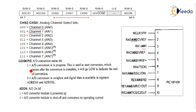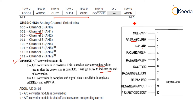If this bit is 1, then an A-to-D conversion is in process. This is the GO/DONE bit used as a start conversion signal, as we already saw in the ADC block diagram. After conversion is complete, it goes low to indicate the end of conversion. This register is bit-addressable, so we can set any individual bit high or clear it.